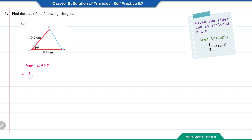So the area of triangle ABC will equal 1 over 2 times 16.2 times 18.4 times sin 49 degrees. The answer is 112.48.